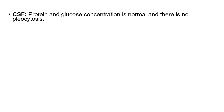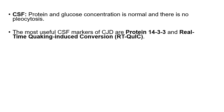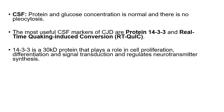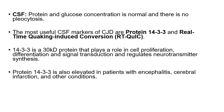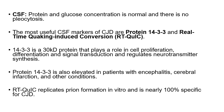The CSF in CJD is quite normal — there is no pleocytosis, and glucose and protein concentrations are normal. The most useful CSF marker is protein 14-3-3, a 30 kiloDalton protein that plays a critical role in cell proliferation, differentiation, signal transduction, and neurotransmitter synthesis regulation. Protein 14-3-3 is also elevated in other conditions such as encephalitis and cerebral infarction.